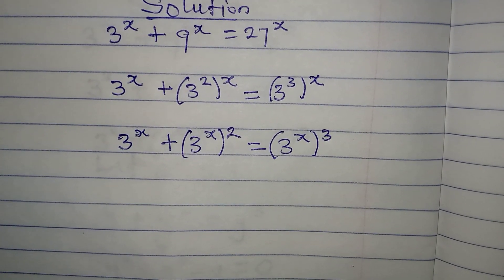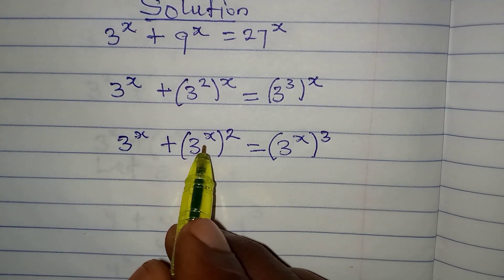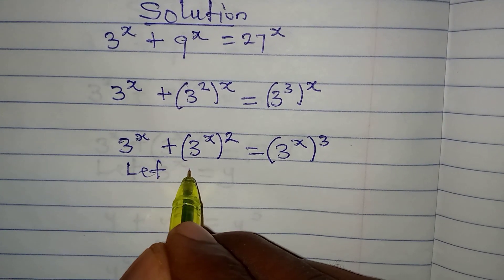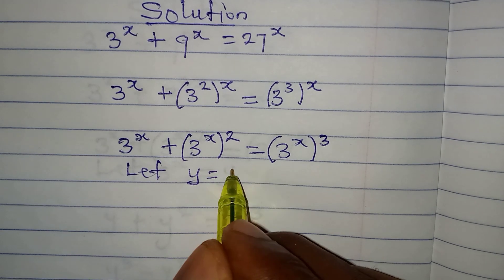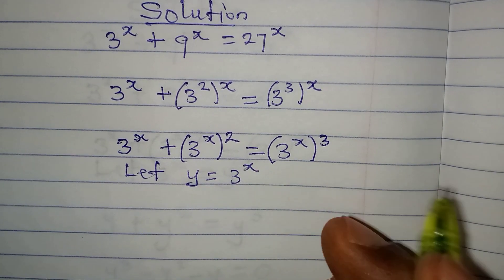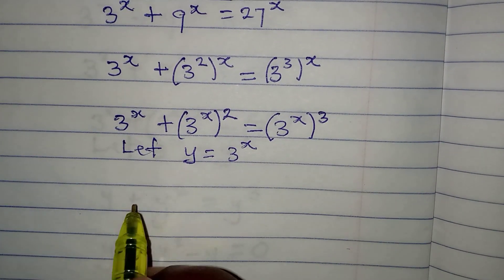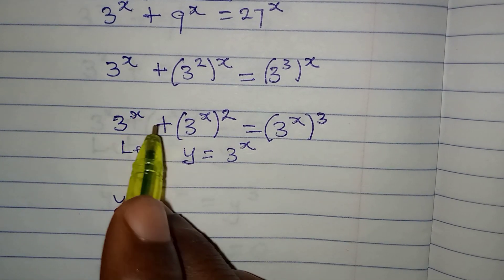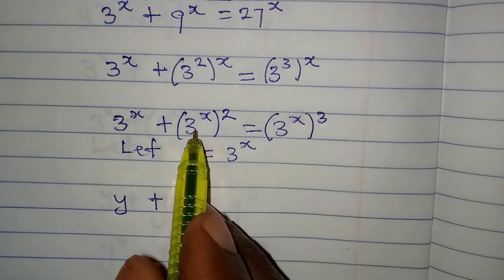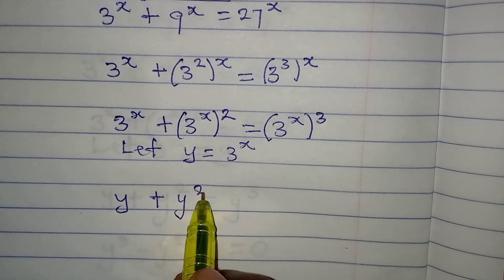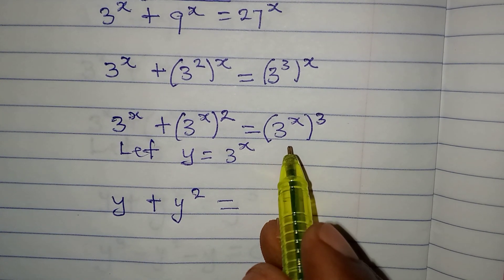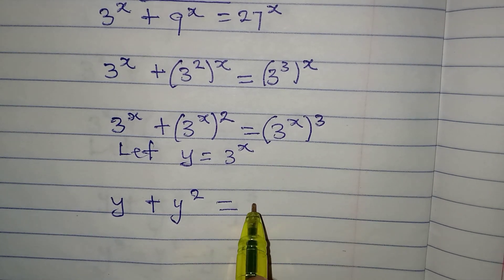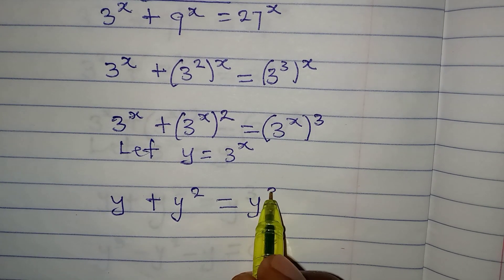The next thing is, since we have 3 to the power of x in three places, we will replace it with a letter. So let y equal 3 to the power of x. From here, we have y for 3 to the power of x, y squared for 3 to the power of 2x, and y cubed for 3 to the power of 3x.